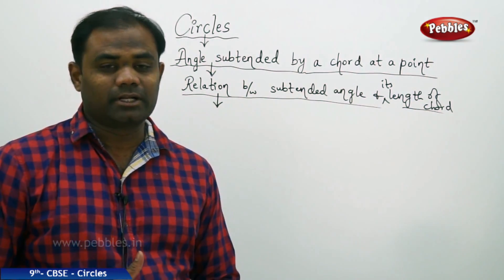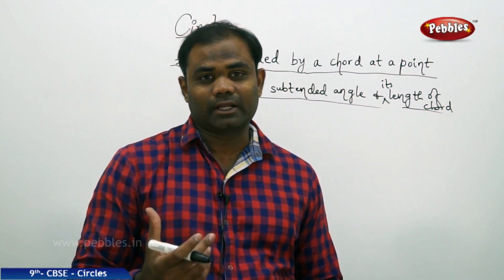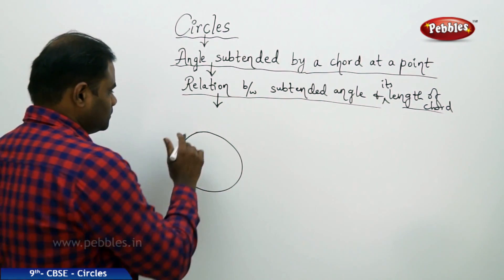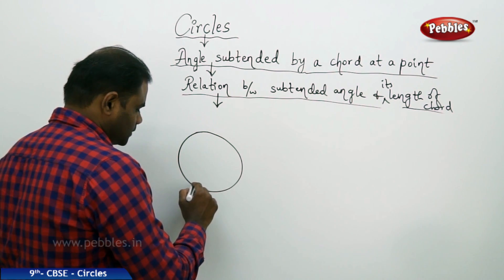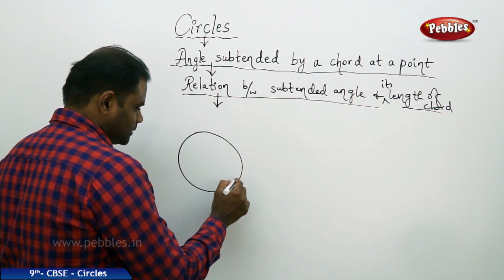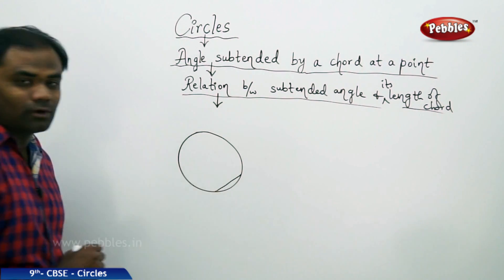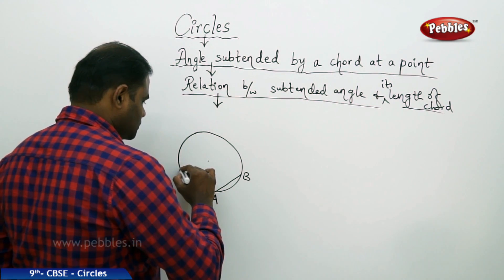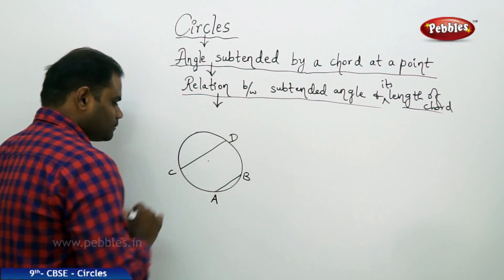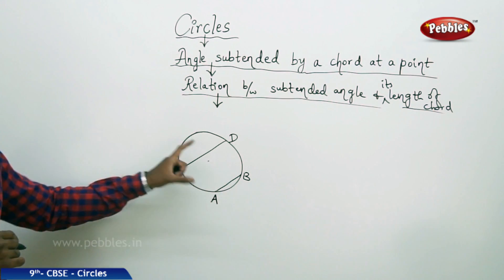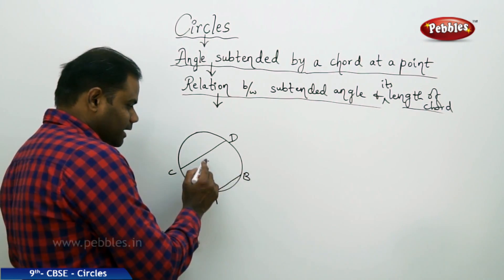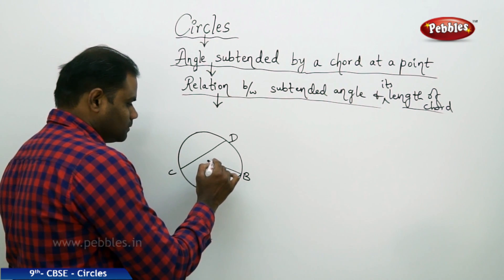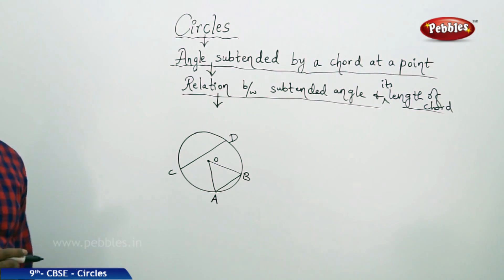Let us take a circle and understand the concept through the investigation of the length of the chord and its subtended angle. Here is the circle, and I take a chord AB with the center marked. The chord AB subtends an angle at the center of the circle — this being the center, it subtends an angle say theta 1.